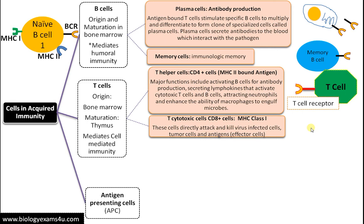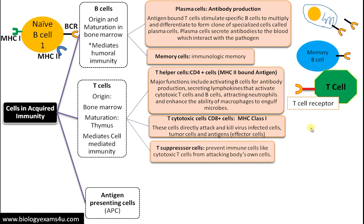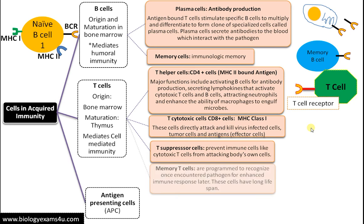Cytotoxic T cells can directly interact with the cell and cause its degradation, thereby preventing further infection. They are very effective against virus-infected cells and tumor cells. The third subclass is T suppressor cells, which prevent powerful immune cells like cytotoxic T cells from attacking the body's own cells. So the activity of cytotoxic T cells is regulated by T suppressor cells.